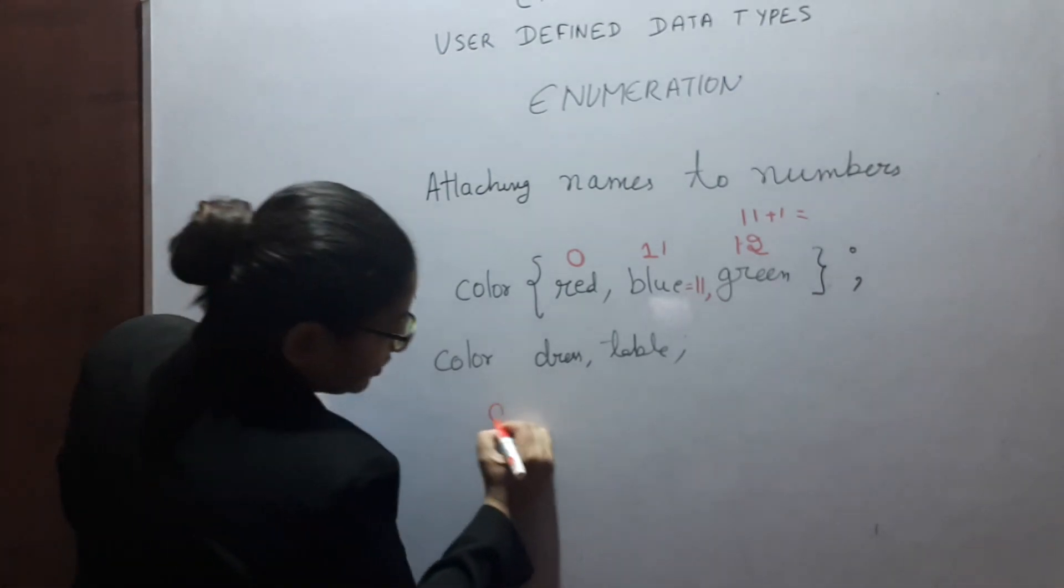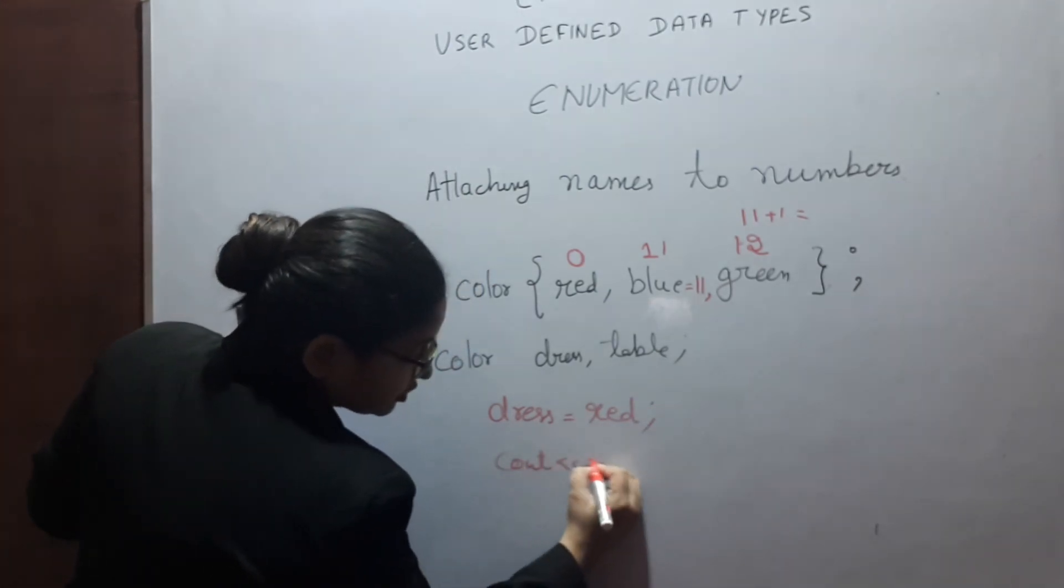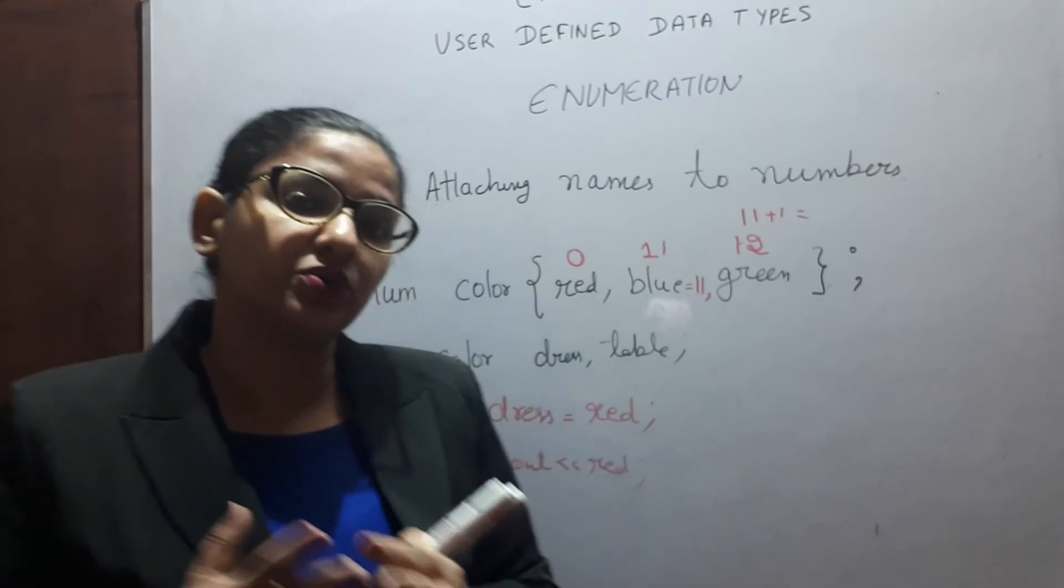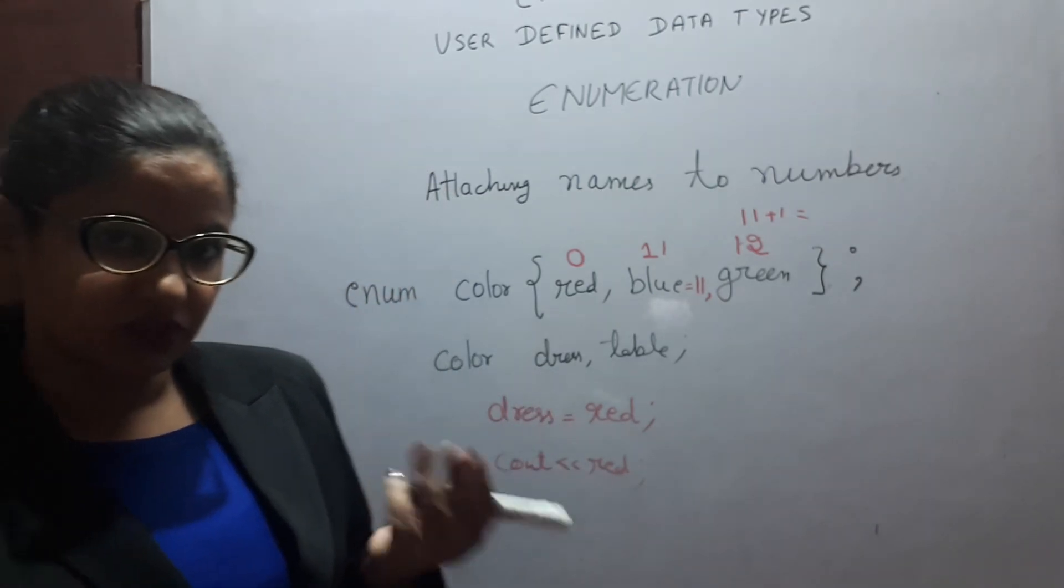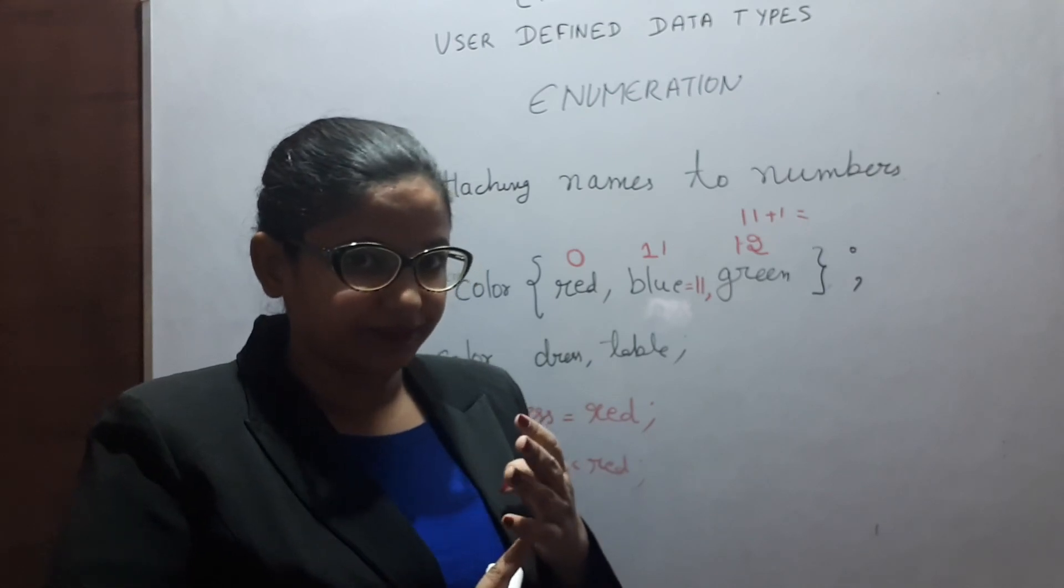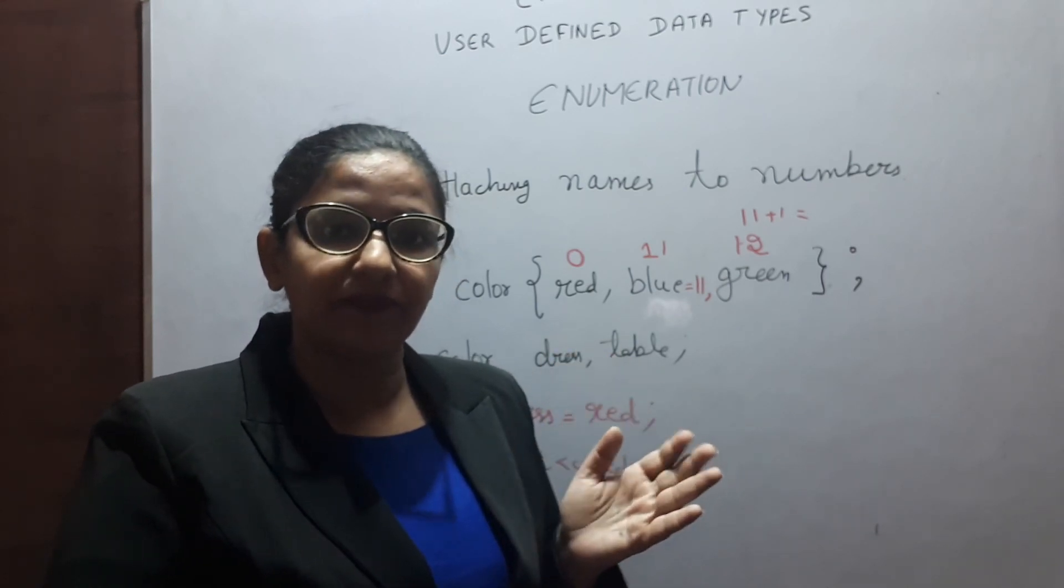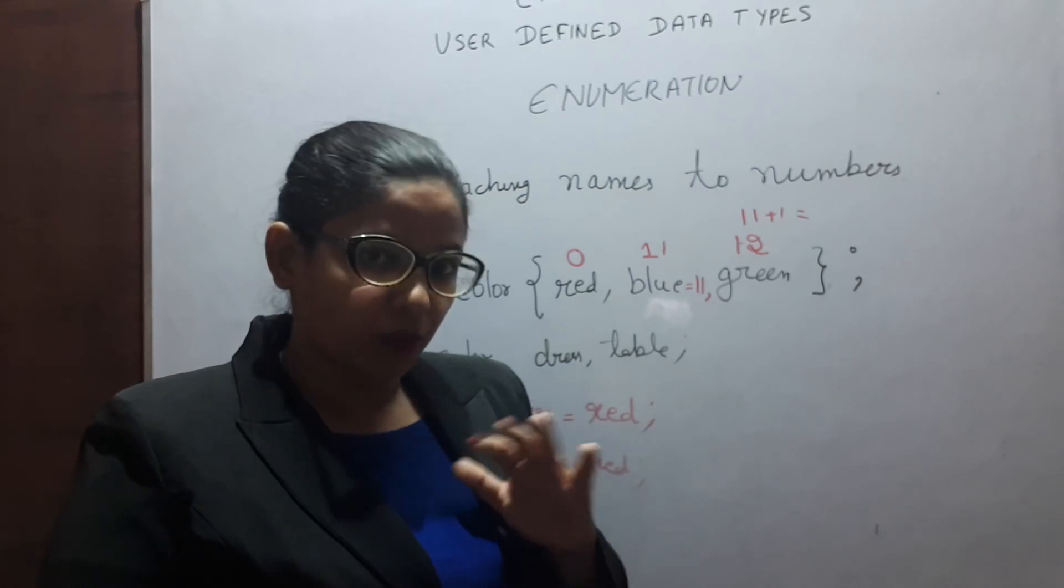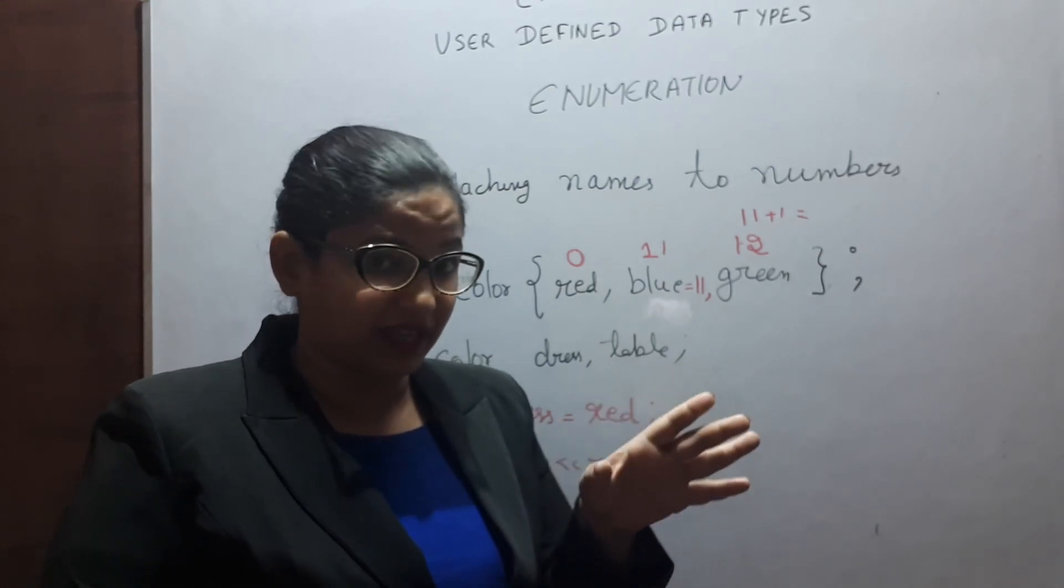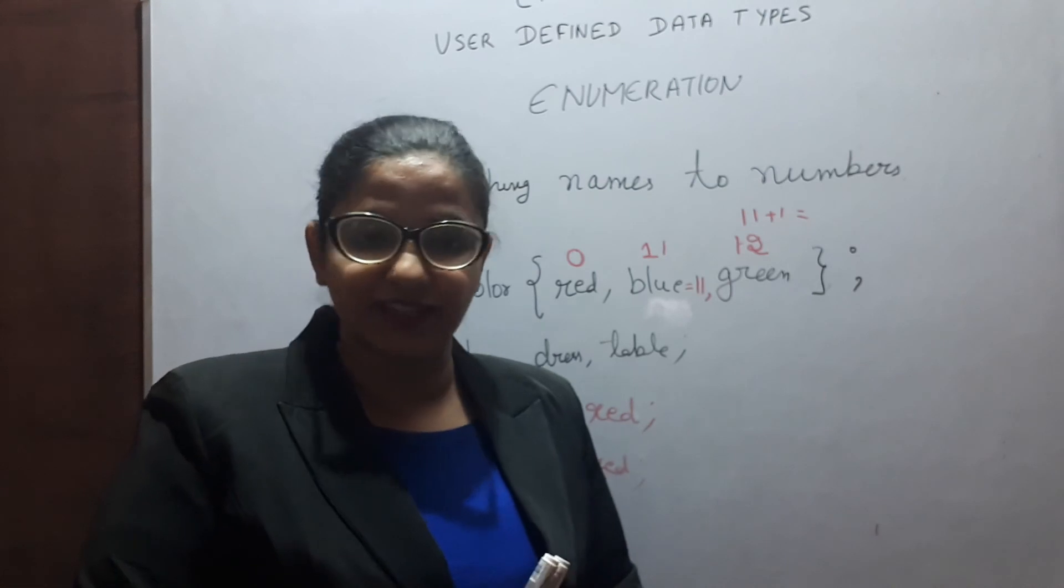You can give value, dress equals to red. You can even see out red. If you do see out, you will get zero. In this video, we have learned about different user defined data types like structure, class, union and enum. Structure and union, memory allocation is different. In unions, all the elements share the same memory. Structure and class, both are same in C++. But by default, all the members of the structure are public and in class, private. Enumeration means attaching names to numbers. That's all. Thank you.